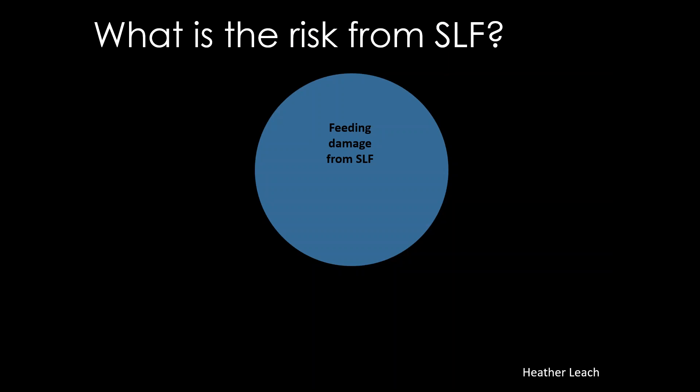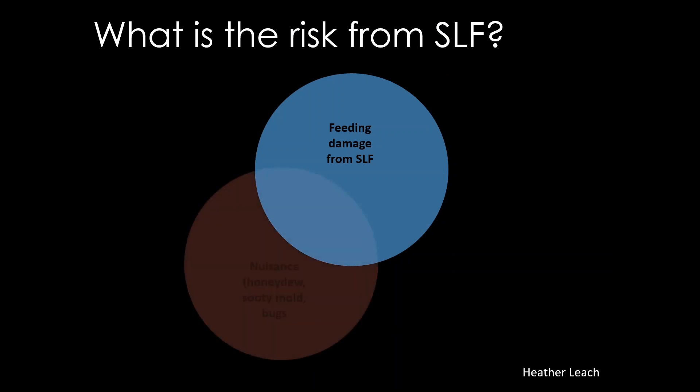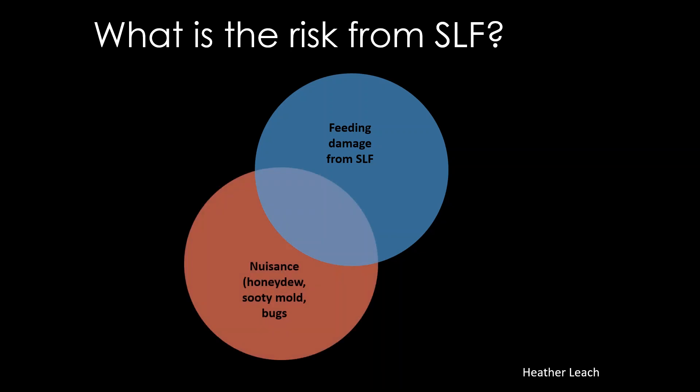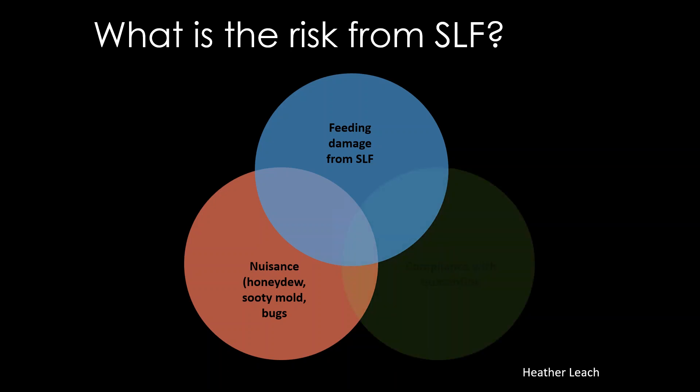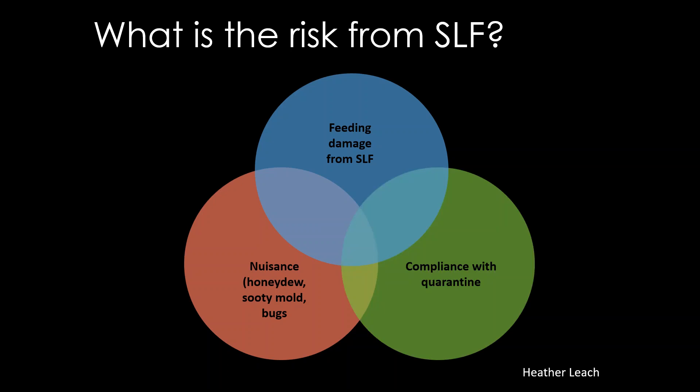The risks from Spotted Lanternfly include outright feeding damage, a nuisance issue where it congregates in high numbers and creates honeydew and sooty mold, and quarantine issues. Where you fit in depends on your situation: grape producers are very concerned about feeding damage, homeowners mostly about the nuisance factor, and nursery producers shipping plants are very concerned about complying with quarantine orders. There's a lot of overlap and a lot of different concerns.